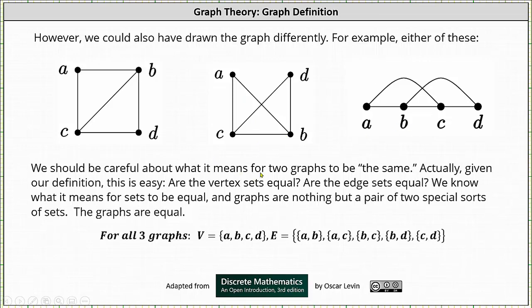Now, we should be careful about what it means for two graphs to be the same. Actually, given our definition, it's fairly straightforward. Are the vertex sets equal? Are the edge sets equal? We know what it means for two sets to be equal, and graphs are nothing but a pair of two special sorts of sets. All the graphs above are equal. Again, they're equal because the vertex sets are equal and the edge sets are equal.